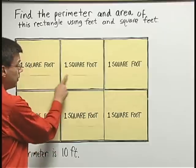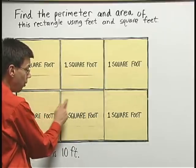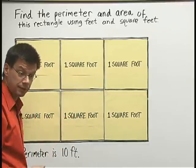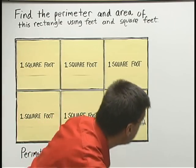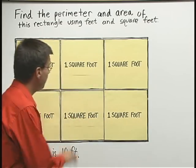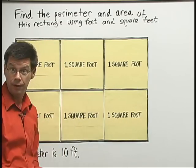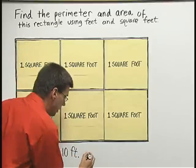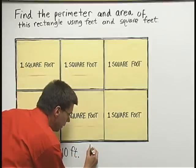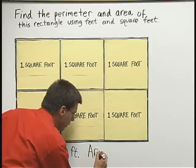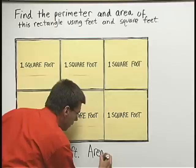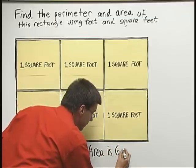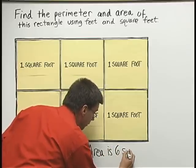So we have one, two, three, four, five, six square feet of area filling up the inside of our rectangle. So we say the area is six square feet.